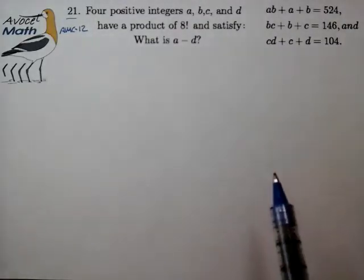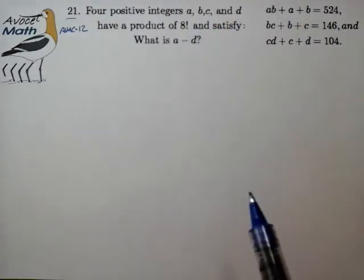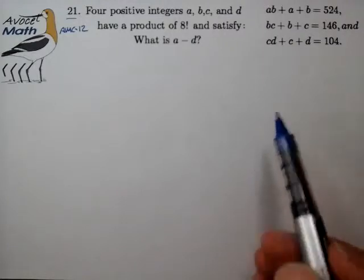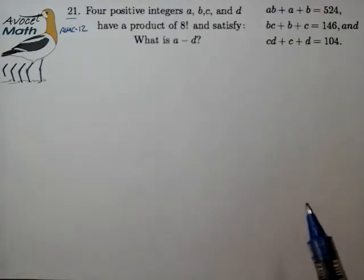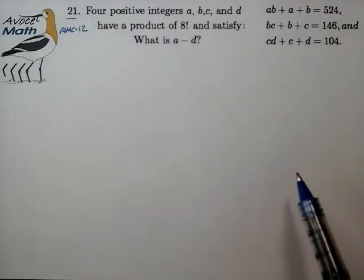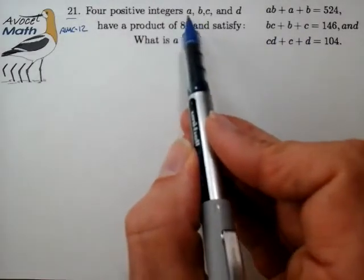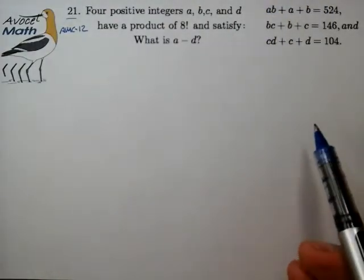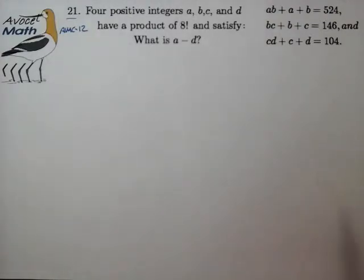My first impressions of this problem: I noticed that I have four variables and four equations, so that's four variables to be solved with four equations. I do see some possibilities to manipulate these equations to get clues as to what A minus D is. But the one thing that sticks out is that while these equations are amenable to sums and differences, the condition that the product equal 8 factorial does not fit in with this structure in any way I'm familiar with. So that's one strike against trying to solve through elimination and substitution.